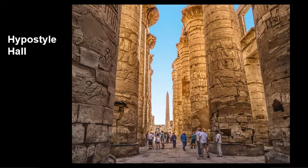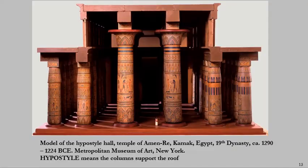To get a better sense of how large these structures are, look at the people next to them. That obelisk in the back was built by Queen Hatshepsut herself — it's the largest and tallest obelisk in all of ancient Egypt ever built. And here's a model of what the hypostyle hall would have possibly looked like.